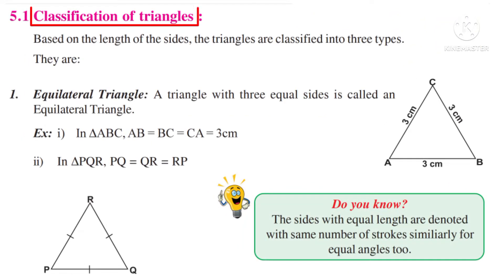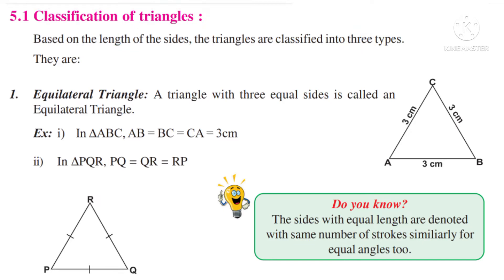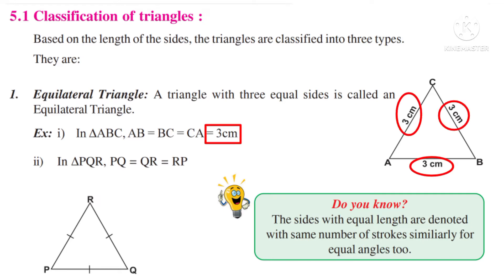Classification of triangles based on the length of their sides: triangles are classified into three types. Number 1: Equilateral Triangle. A triangle with three equal sides is called an equilateral triangle. Observe — the word 'equi' means equal. For example, in triangle ABC, AB = BC = CA = 3 cm. All are of equal length, so it is an equilateral triangle.